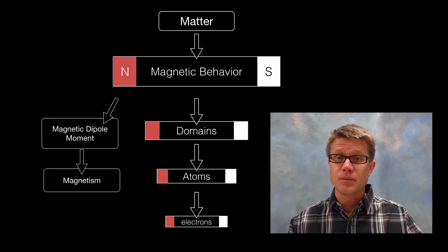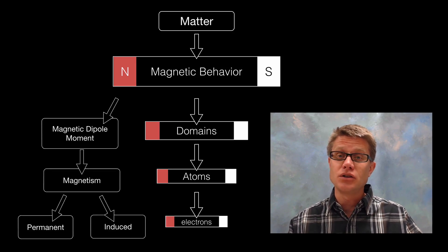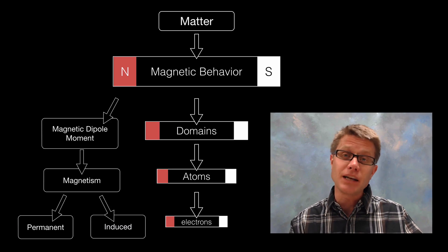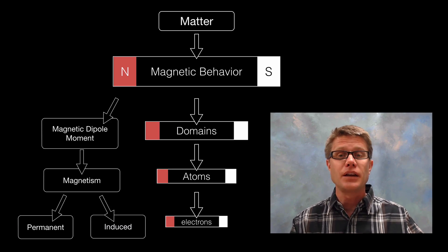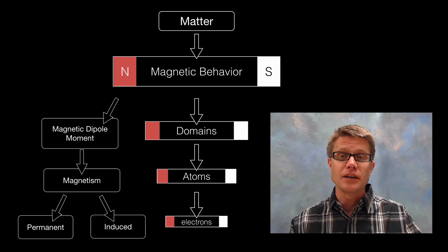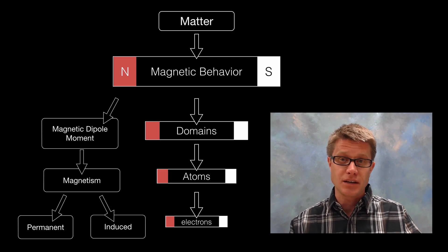So what is magnetism? Well in a permanent magnet or an induced magnet what we are doing is lining up those dipoles and now the whole object has a dipole as well. A north and a south.